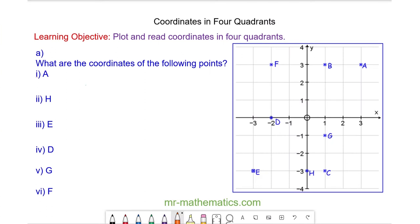Hello and welcome to our lesson on coordinates in four quadrants. A coordinate grid has four quadrants. The first quadrant is when x and y are both positive. As you can see, the values of x are positive and the values of y are positive.